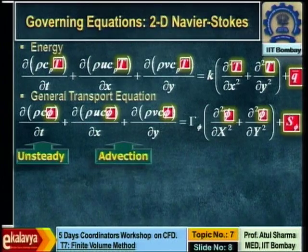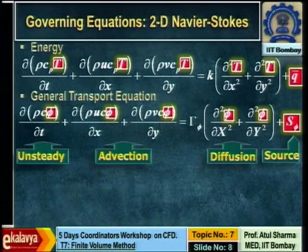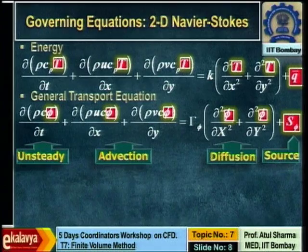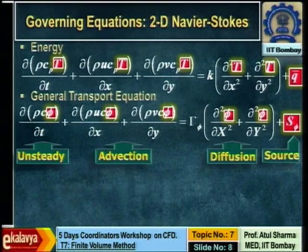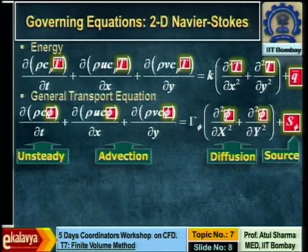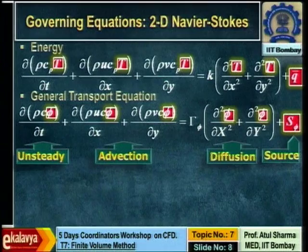In the energy equation also we have certain advected variables and a source term. In CFD we call this the transport equation, having an unsteady term, advection term, diffusion term, and whatever remains is the source term. Now, how many equations do you have? Four equations: continuity, x-momentum, y-momentum, and energy for the two-dimensional case.